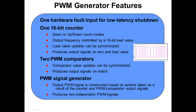Each PWM generator has the following features: a single 16-bit counter, two PWM comparators, and a PWM signal generator. The 16-bit counter has down or up-down count modes, and an output frequency which is controlled by a 16-bit load value. The load value's updates can be synchronized with the output signal, between generators, or between modules. The generator will produce an output signal at the zero and load values.